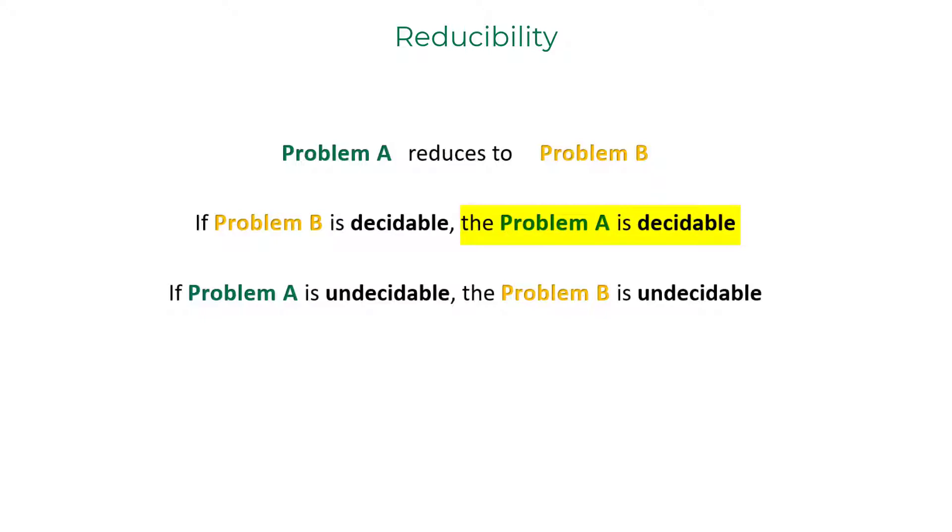If A is already known to be an undecidable problem and is reducible to B, then B should also be undecidable.